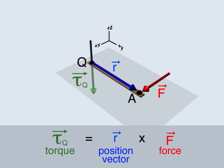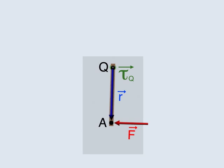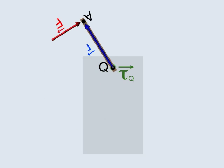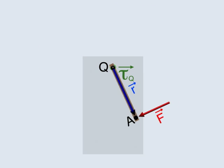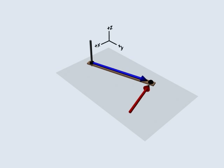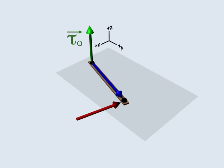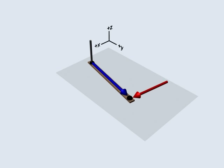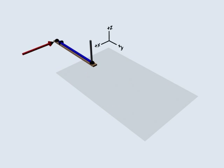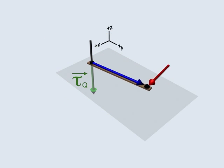The torque due to the force will cause the rod to rotate clockwise as viewed from above. A counterclockwise rotation is due to a torque along the positive Z axis, whereas a clockwise rotation is due to a torque along the negative Z axis.